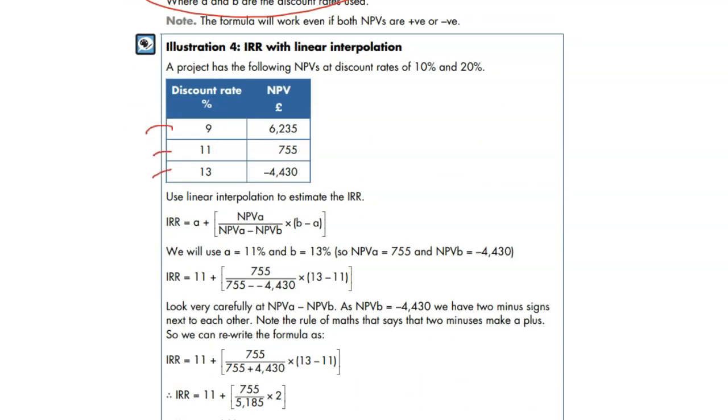I've given it three discounting factors, 9, 11, 13. So 11 is positive, 13 is negative. Your NPV should be, the IRR should be in between 11 and 13.